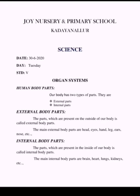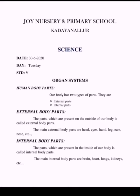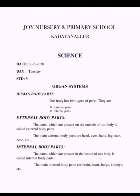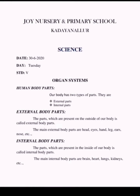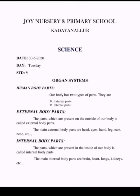After that start to write these lines in your note. Our body has two types of parts. They are external parts and internal parts. External body parts: the parts which are present on the outside of our body are called external body parts. The main internal body parts are brain, heart, lungs, kidneys, etc.